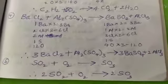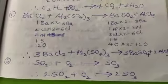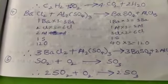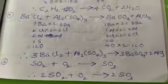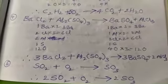After balancing, we get 3BaCl2 plus Al2(SO4)3 gives 3BaSO4 plus 2AlCl3.